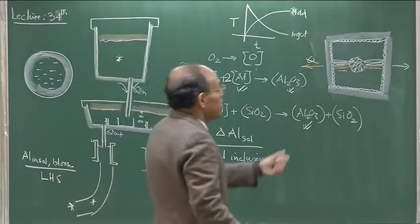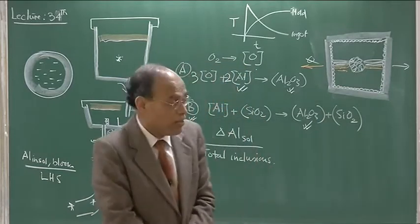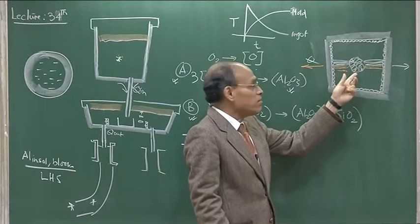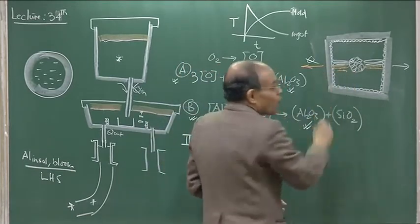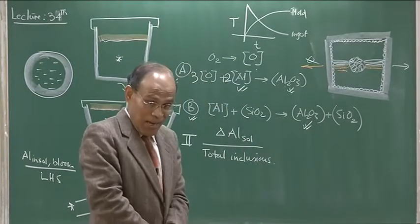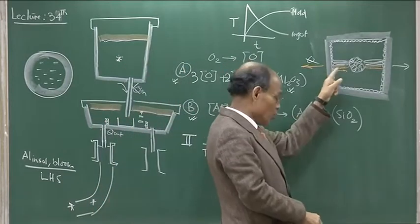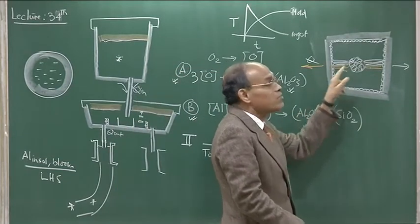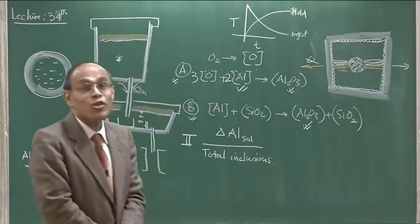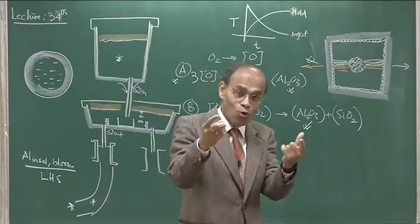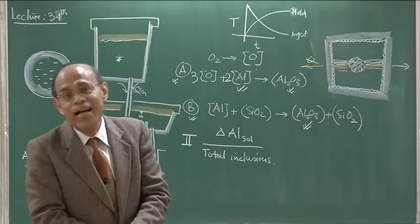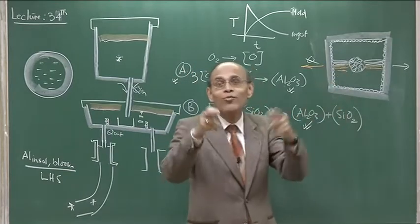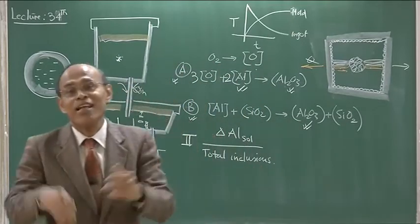This is the typical solidification structure of an ingot: chilled zone, columnar zone, and equiaxed zone — the equiaxed zone forming due to constitutional supercooling. There is also a coring defect: the first crystal to form is pure and the last part to solidify becomes impure, creating a large difference in solute concentration. To eliminate coring, the ingot is heated to increase diffusion, setting up concentration gradients and resulting in homogenization.